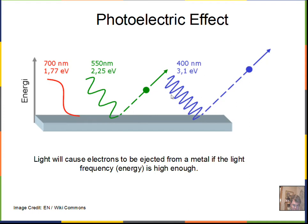If the light is short enough in wavelength — meaning high enough frequency — it carries enough energy to release an electron from the metal. Green light has enough energy; red light does not. The energy values can be expressed in electron volts, which is the energy an electron gains moving through one volt of potential difference. The energy is tied to both wavelength and frequency.